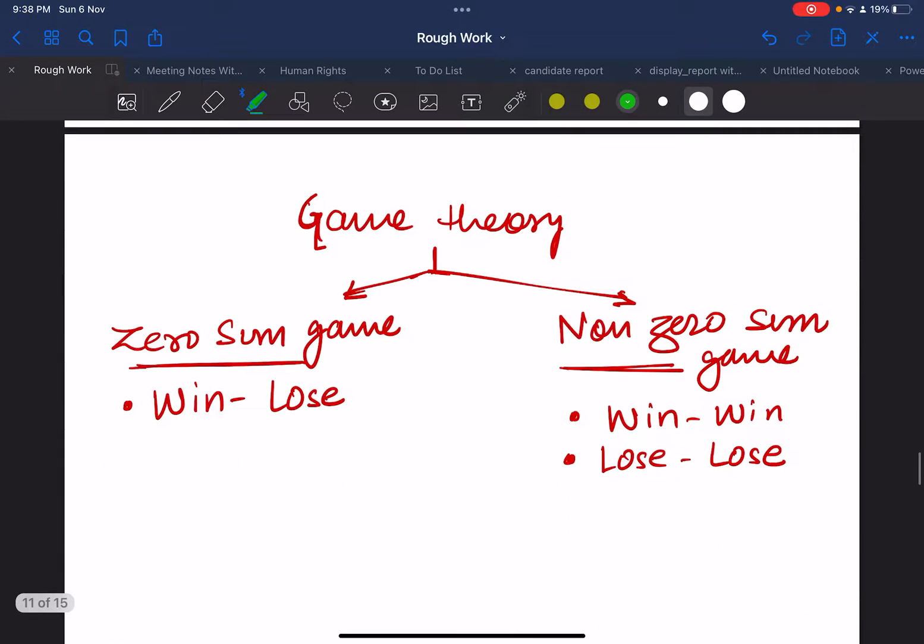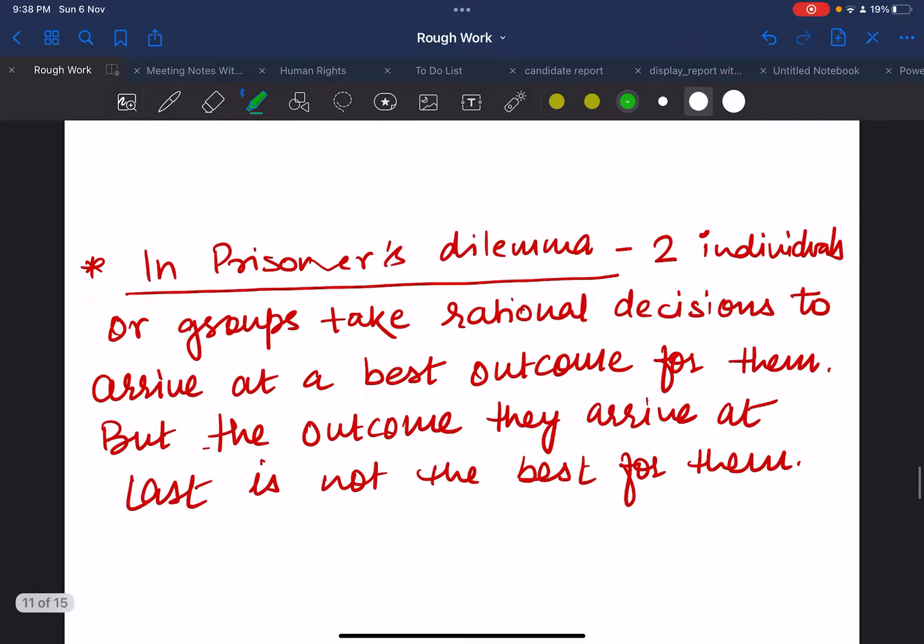Game theory is actually further bifurcated into two kinds of outcomes. The outcome can be seen either in zero-sum game where one will win and the second one will lose, or it can be seen in non-zero-sum game. In non-zero-sum game both can win or both can lose. Remember, zero-sum game is win-lose, non-zero-sum is win-win or lose-lose situation.